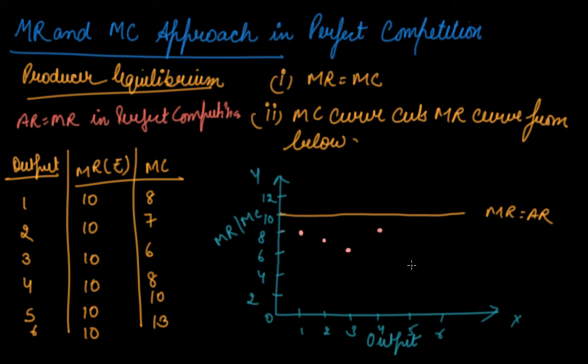When it's five, your MC is ten. And then at six, your MC is thirteen. So this is your marginal cost or MC curve.